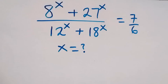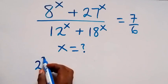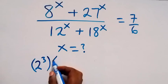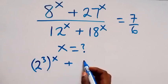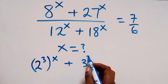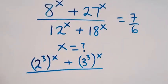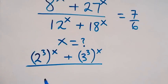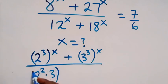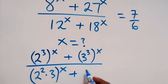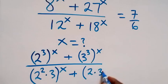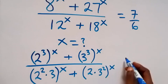Let's write 8 as 2 raised to the power 3, then raised to the power x. We write 27 as 3 raised to the power 3, then raised to the power x. We write 12 as 2 squared times 3, that's 4 times 3, then raised to the power x. And 18 as 2 times 3 squared, then raised to the power x, equals 7 over 6.